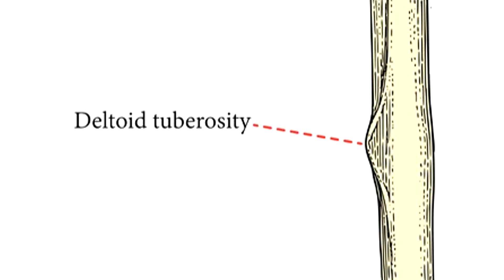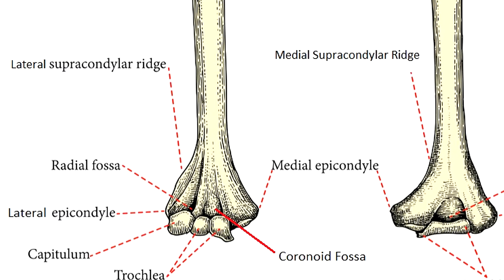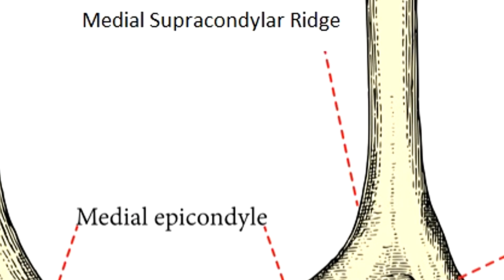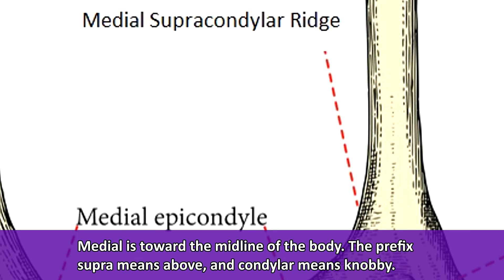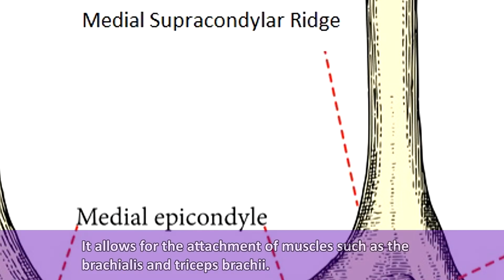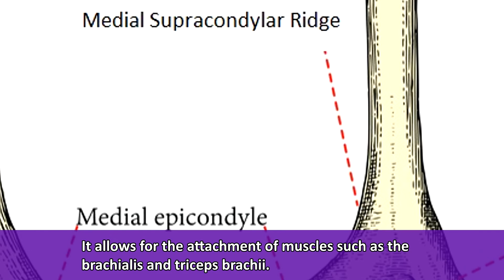Toward the distal end of the humerus's shaft, we have a ridge that forms on each side connecting to the epicondyles below. The ridge toward the midline of the body, visible in the posterior view of the right humerus, is called the medial supracondylar ridge. Medial means toward the midline of the body, the prefix supra means above, and condylar means knobby — so this is the ridge toward the middle of the body that is above the knobby structure at the end of the humerus. It allows for the attachment of muscles such as the brachialis and the triceps brachii.